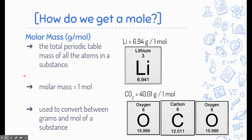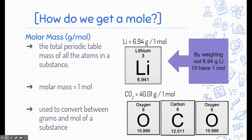The molar mass is the total periodic table masses of all the elements in a substance. For example, if I had the substance lithium and I wanted to get a mole of lithium, I would look on the periodic table. The mass of an atom of lithium is 6.941. A cool trick we can do is just change the unit from the mass of an atom to grams — if we weigh out 6.941 grams of lithium, we would have one mole. So the molar mass of a substance is the mass on the periodic table, and that represents one mole of that substance.